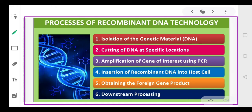The steps are: first, the isolation of the genetic material, that is the DNA. Second, cutting of DNA at the specific locations. Third, amplification of gene of interest using PCR. Fourth, insertion of recombinant DNA into the host cell. Fifth, obtaining the foreign gene product and the downstream process.